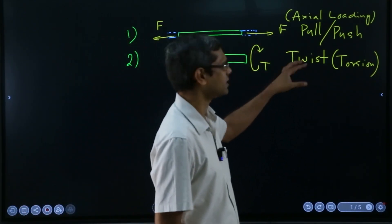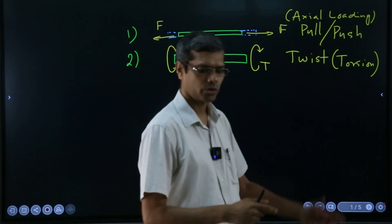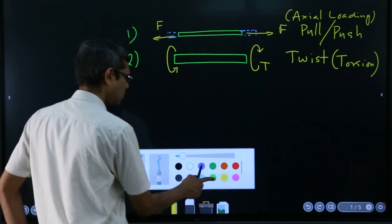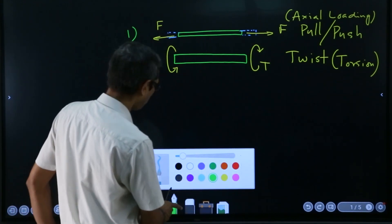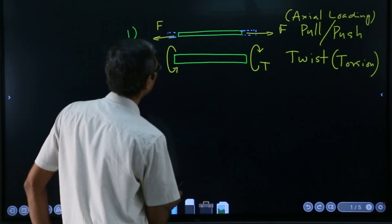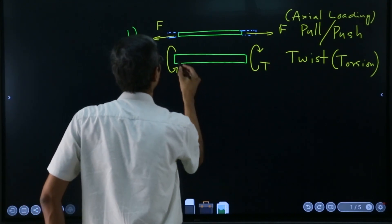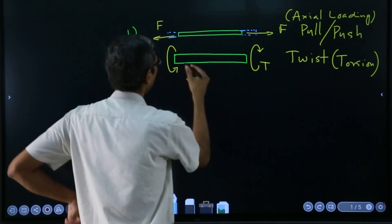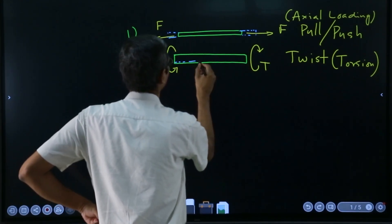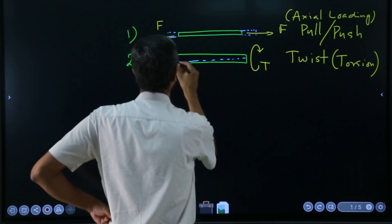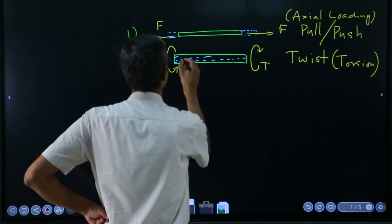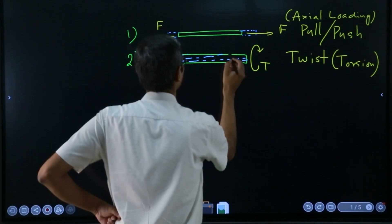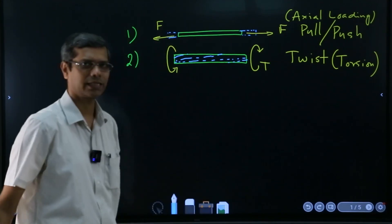Coming to the third one, before we do that, shall I show at least something how it will deform? For example, if we had lines drawn on this body, now they will become something like this. They will twist like that.